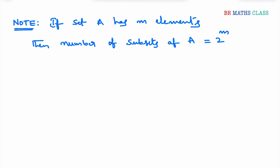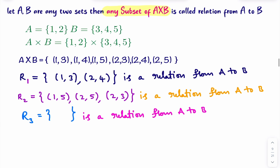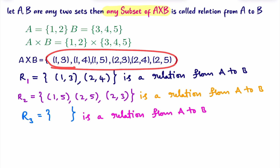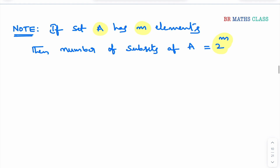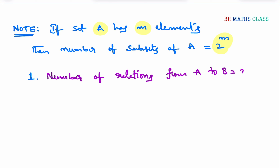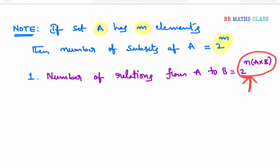If set A has M elements, the number of subsets of set A is 2 power M — this is from the sets chapter. Here, A cross B contains 6 elements, so the number of subsets of A cross B is 2 power 6 = 64. So we can write 64 relations from A to B. Note 1: the number of relations from A to B is 2 raised to the power of the number of elements in A cross B.